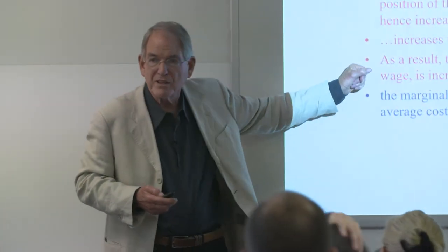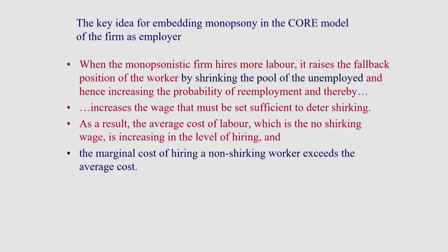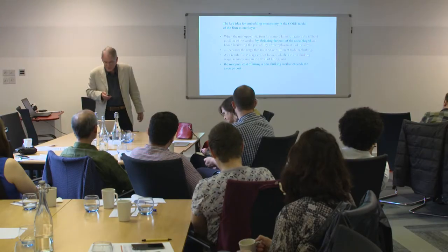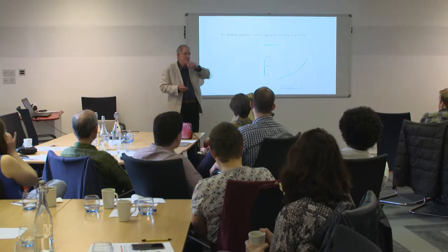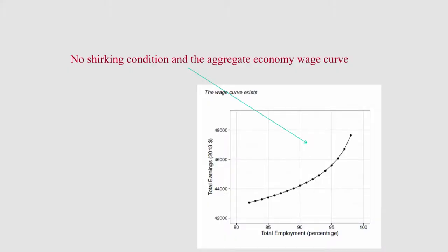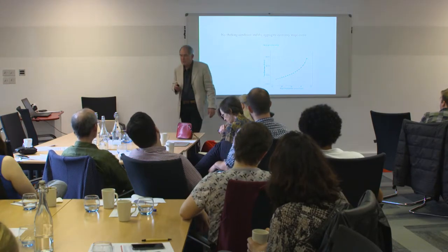The average cost of labor rising is critical because if the average cost is rising, obviously the marginal cost is higher, and that's going to be critical in why the minimum wage could actually increase the amount of employment. This is an empirically estimated wage curve from the United States for the whole economy. If you do it analytically — which is what the next couple of slides show — you get exactly a function looking like this. So the empirical data and the theoretically derived object look very similar. The idea is: suppose the firm is facing a function like this as their average cost of labor. How would a minimum wage impact them?